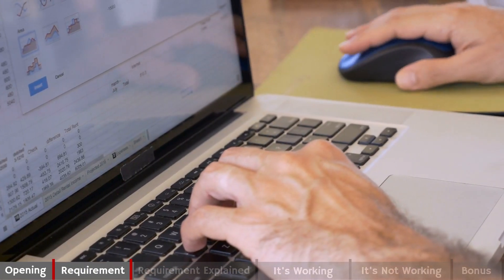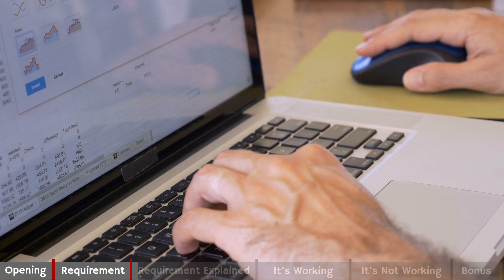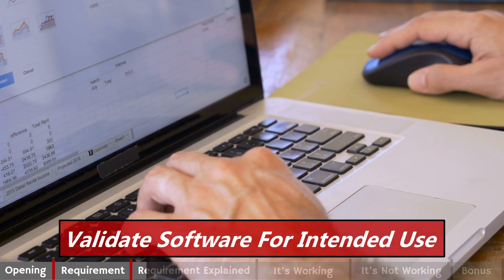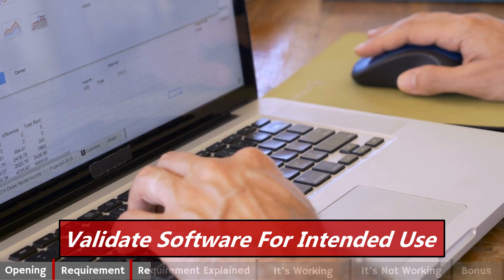Automated processes or software validation in five words. Validate software for intended use. Any software used in the quality management system has to be validated for its intended use. So what I want you to think about is spreadsheets used where calculations are made or decisions are made or macros are used.